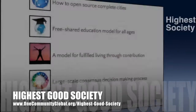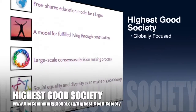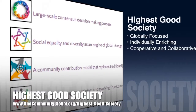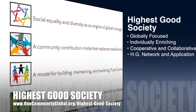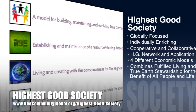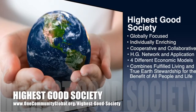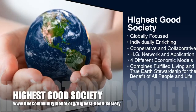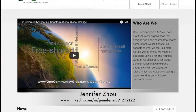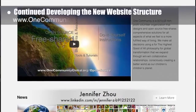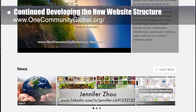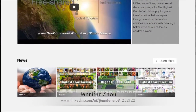The One Community approach to Highest Good Society is globally focused, individually enriching, cooperative and collaborative, includes a Highest Good network and application, four different economic models, and combines fulfilled living and true earth stewardship for the benefit of all people and all life on this planet. This week, Jennifer Zhao, web designer, completed her 12th week of work developing the new website structure. We lost a week of work due to a website crash, so her work was mainly focused on restoring what was lost.